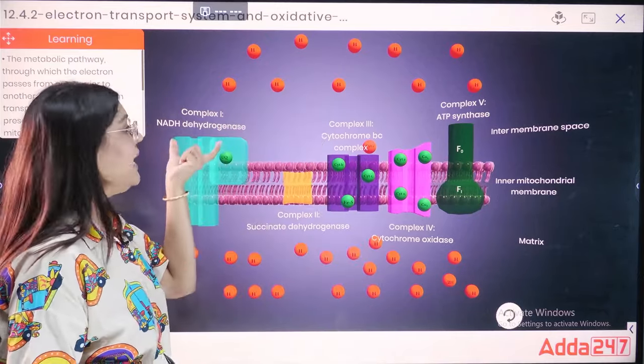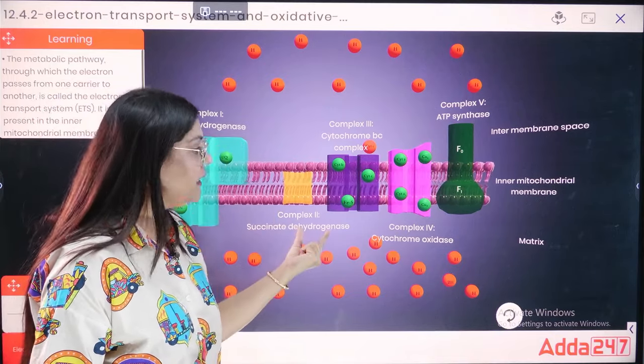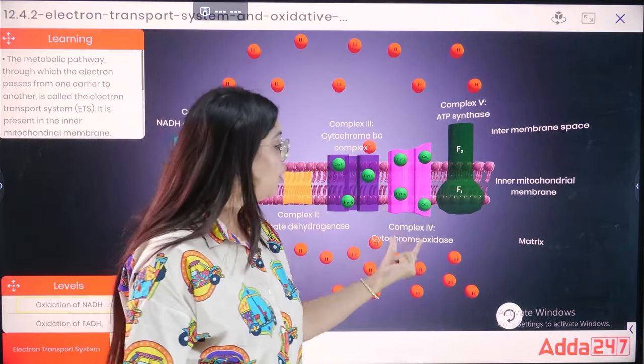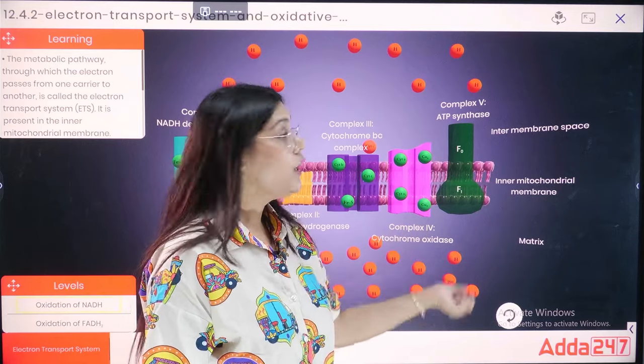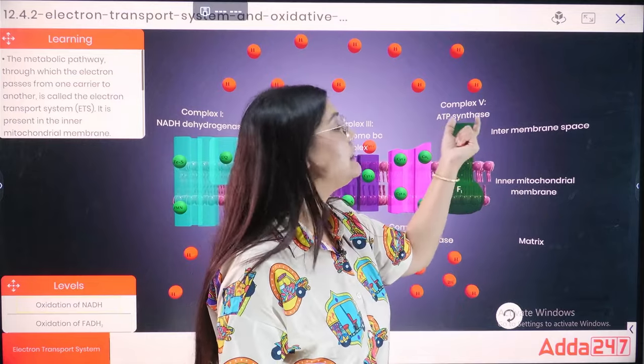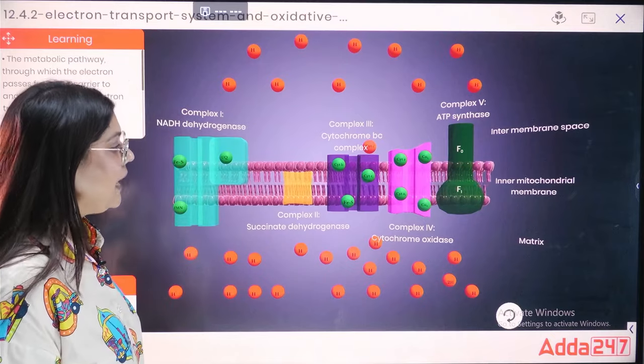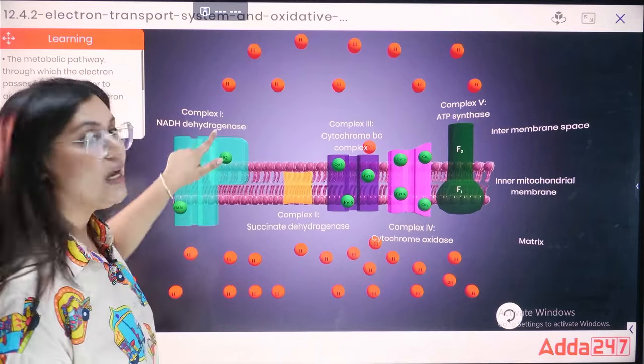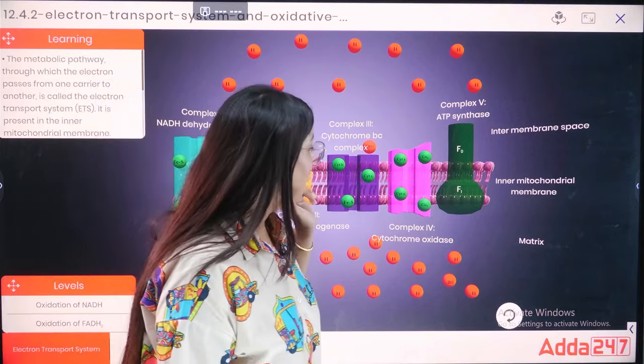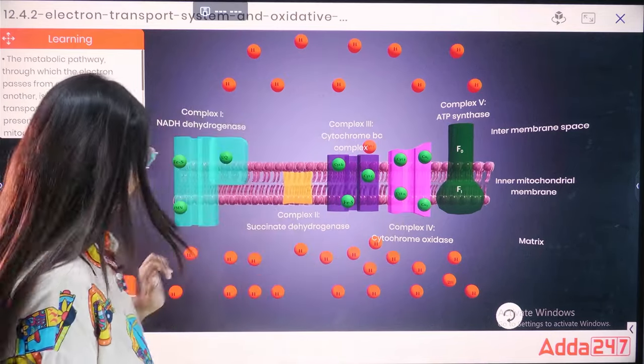Complex number one is NADH dehydrogenase. The second complex is succinate dehydrogenase. The third complex is cytochrome BC complex. The fourth complex is cytochrome oxidase. And the last one is F0F1 particle, ATP synthase, which is complex 5. So, these are five complexes. As you can see their names, here is NADH dehydrogenase, which is NADH. And here is our complex, next one is FADH2.